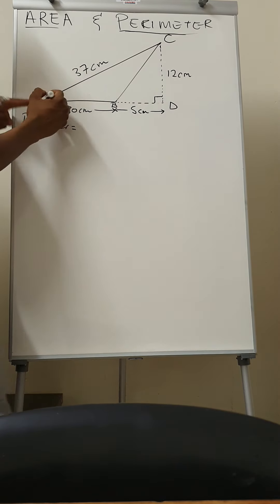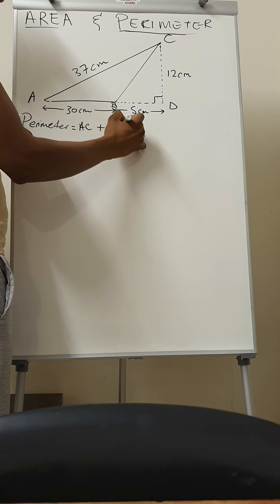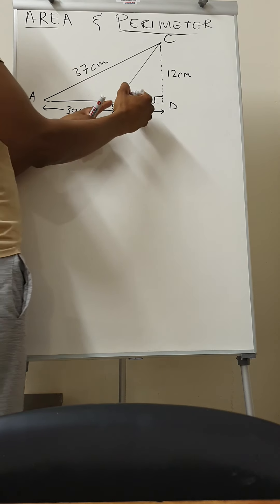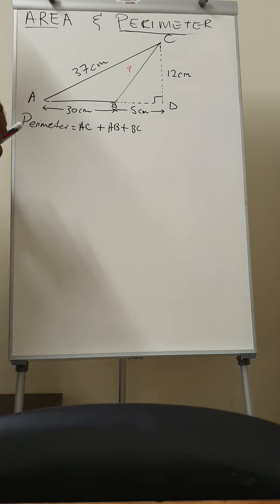So we're going to take AC plus AB plus BC. But we don't know what is BC, so we have to find BC first.